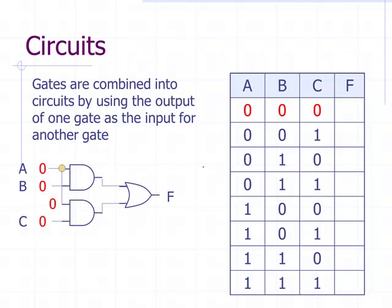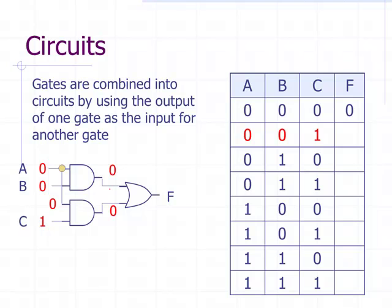Let's create a truth table for this circuit with two AND gates and an OR gate. If A, B, and C are all zero: zero and zero through the first AND gate is zero; zero and zero through the second AND gate is zero; two zeros through the OR gate gives zero. If A is zero, B is zero, C is one: the first stage generates two zeros, and through the OR gate you still get zero. If A is zero, B is one, C is zero: zero and one through AND is zero, zero and zero through OR is zero.